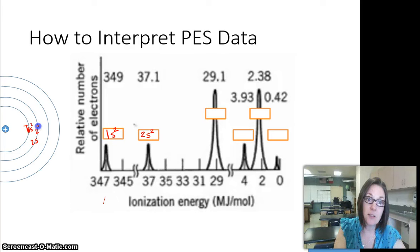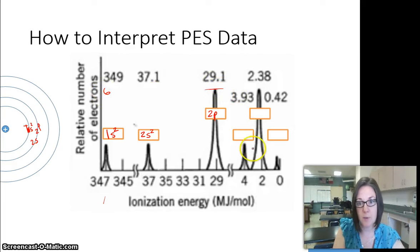After 2S, we would go to still on the second energy level, but we'd go over to the P-sublevel. So this is going to be 2P. Now this is a much taller peak, so it's probably going to be 6, because a P-sublevel can hold 6, so that would be 2P6.